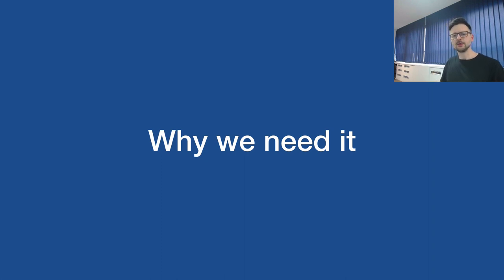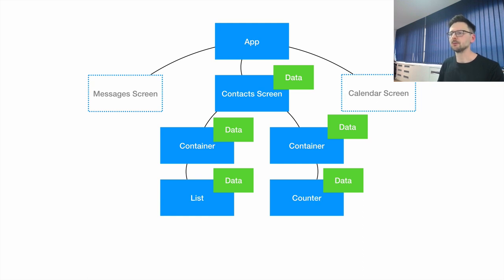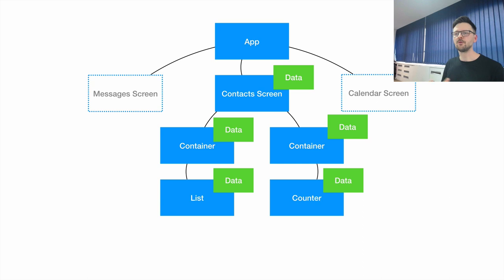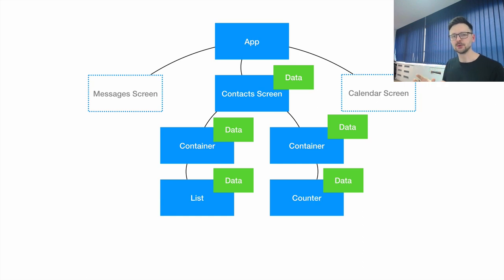The inherited widget's function is to provide data to other widgets down the widget tree. But why do we really need it? Let's take as an example the application we are building. We have a simplified version of our widget tree — the app, material scaffold, and three screens: messages, contacts, and an empty calendar screen. In the contacts part we have some widgets, eventually a list of contacts and a counter showing the number of contacts currently displayed.